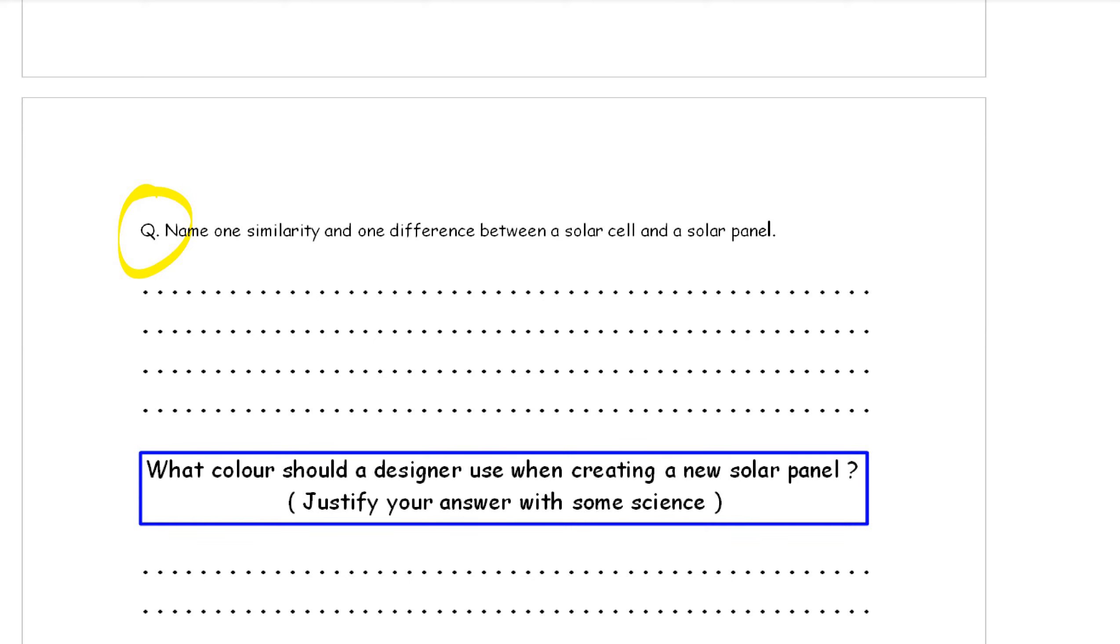Name one similarity and one difference between a solar cell and a solar panel. You need to write this down. The similarity is they're both going to be colored with a very dark color or black. And that is because, well, we'll come on to that a bit later on, that the panels are going to be black or very dark. Now, the difference is very stark. A solar cell takes infrared heat energy and converts it into electricity, whereas a solar panel just heats up water. And that helps to save money on your electricity or gas bills.